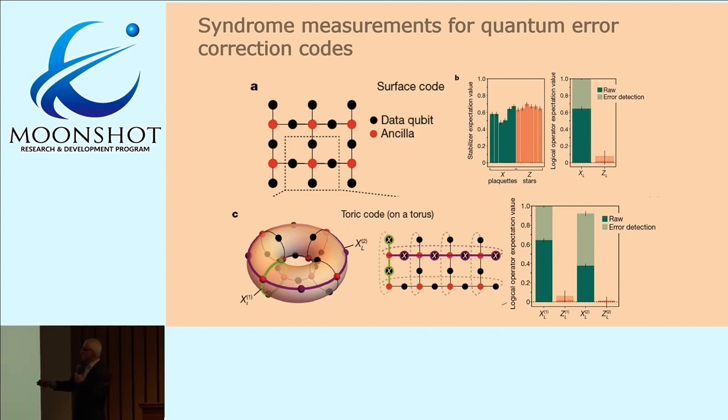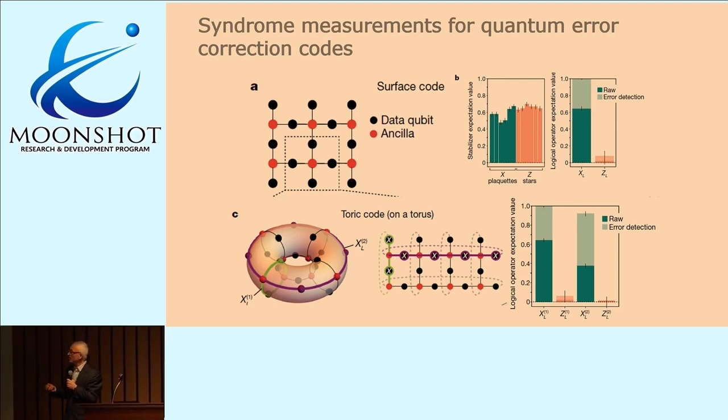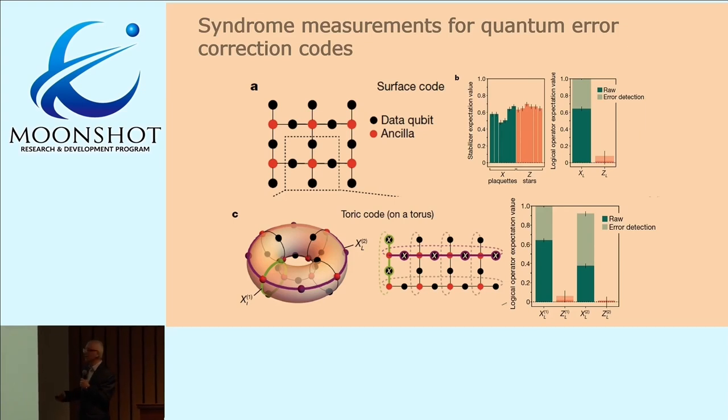We did then first experiments on a surface code and also on a Toric code. Basically, even though our atoms are in two dimensions, because we can move them around freely, we can in principle make codes in any number of dimensions. We also implemented this Toric code. Basically what these data tell you, without going too much detail into it, is that the so-called measurement qubits, the ones that detect the errors, agree with the directly measured errors in the data qubits to a good degree.